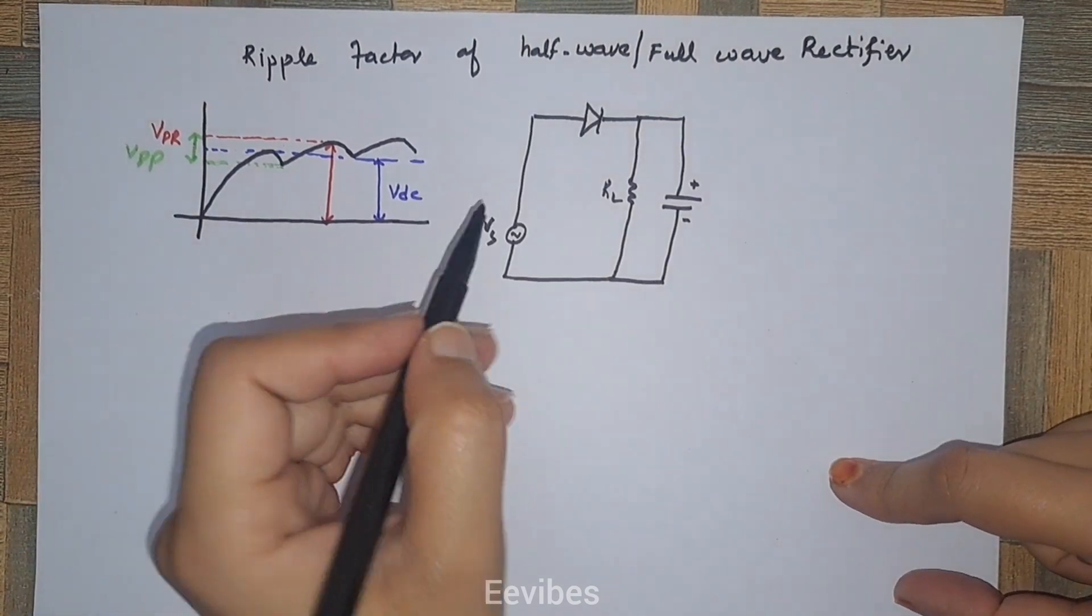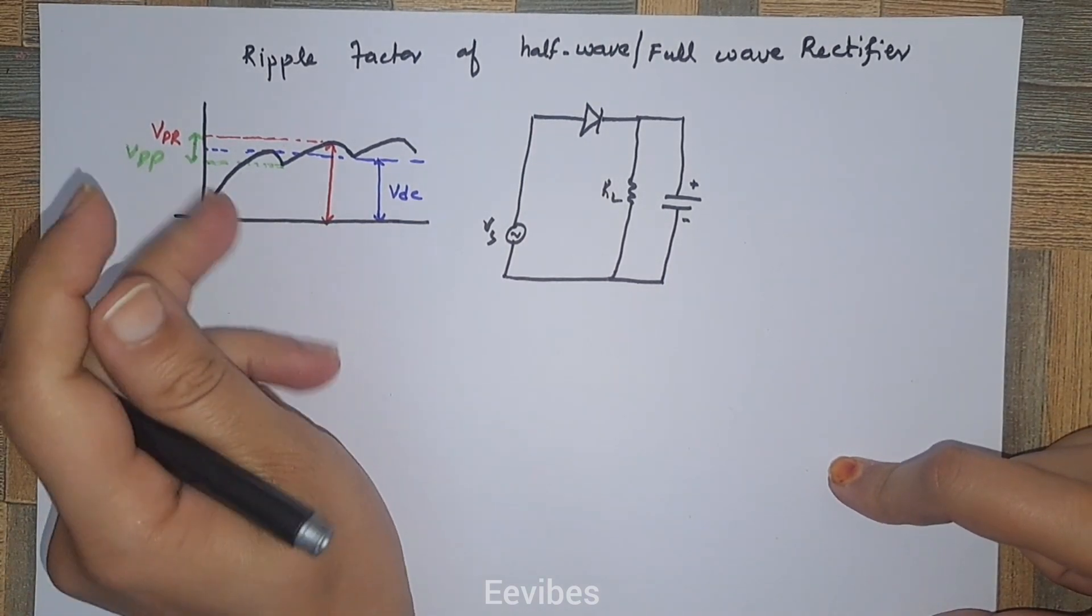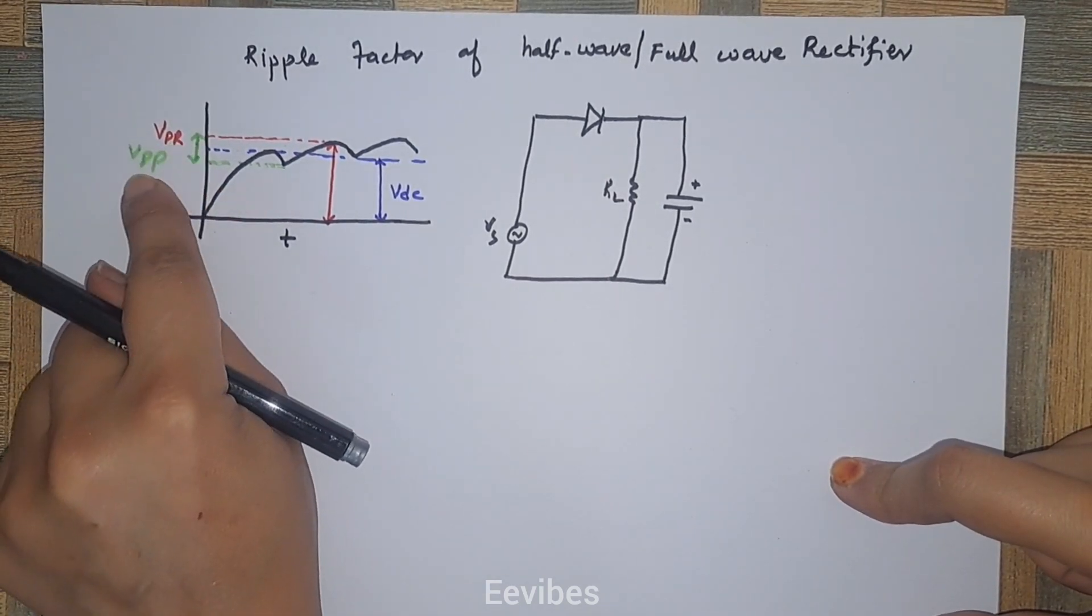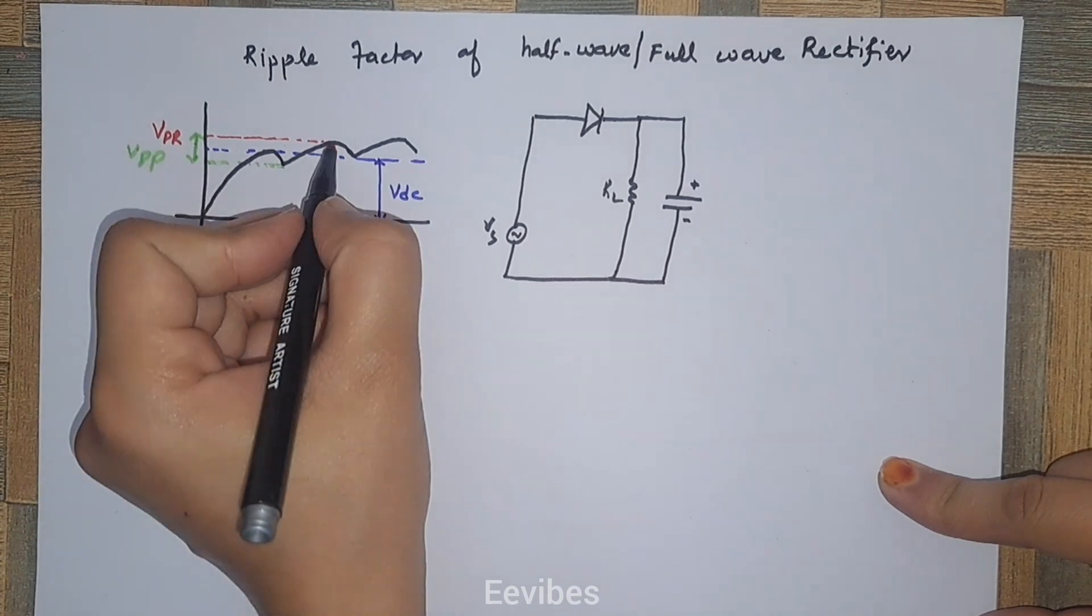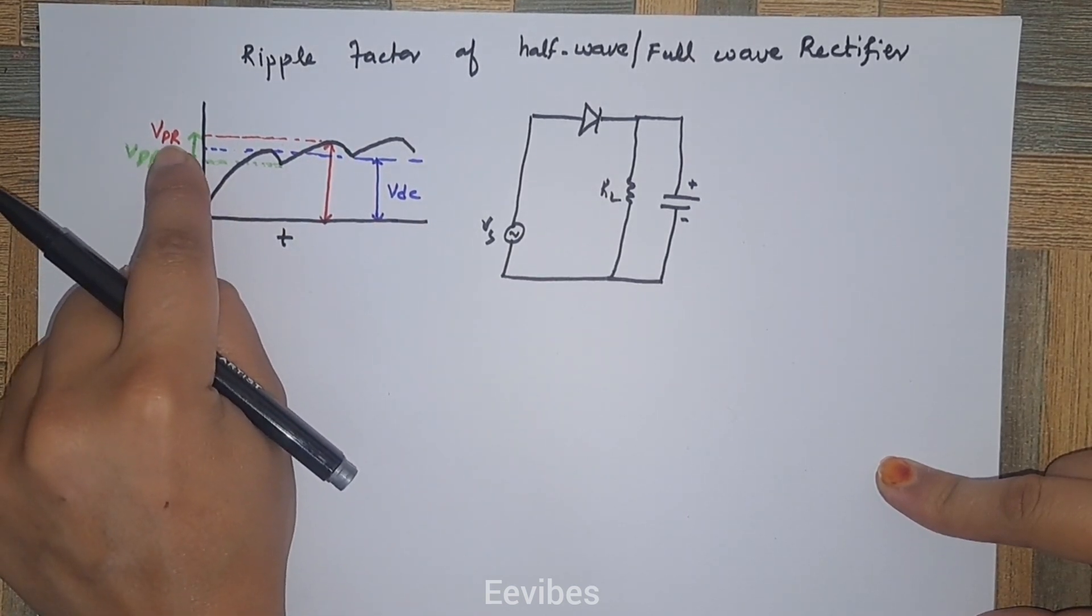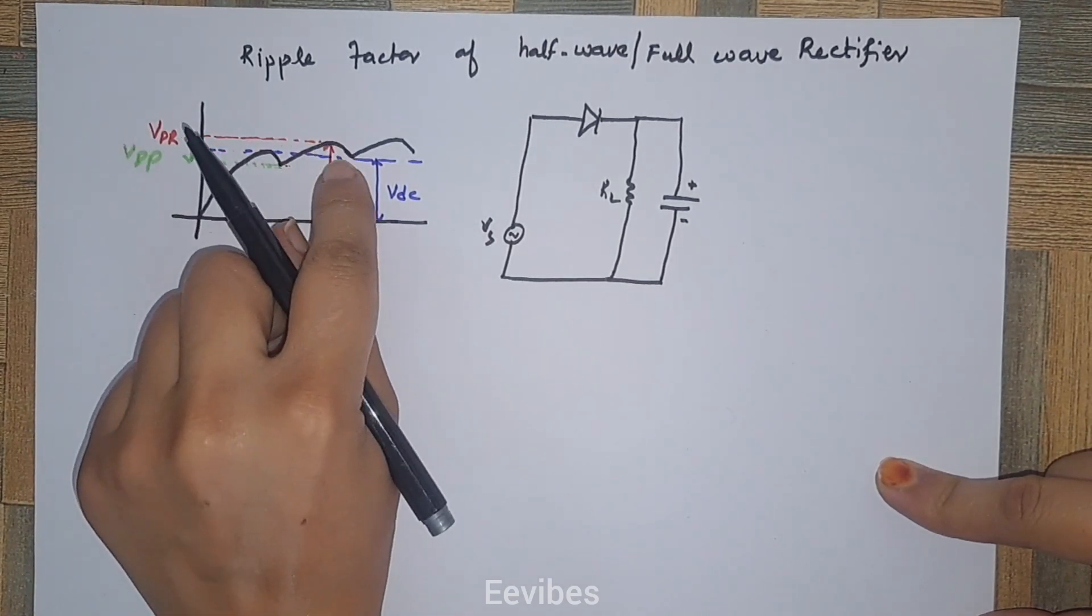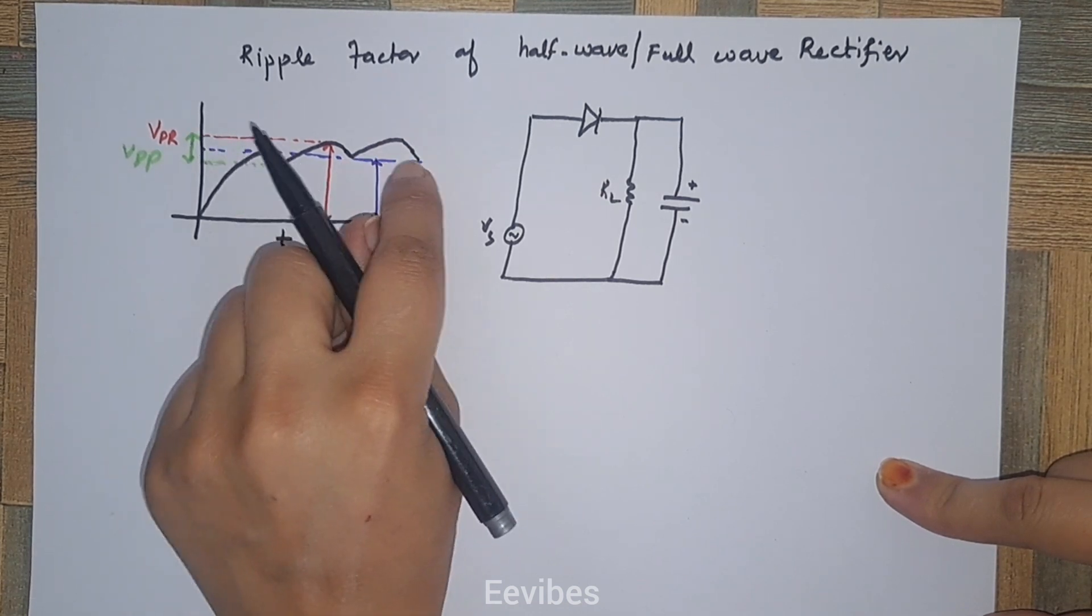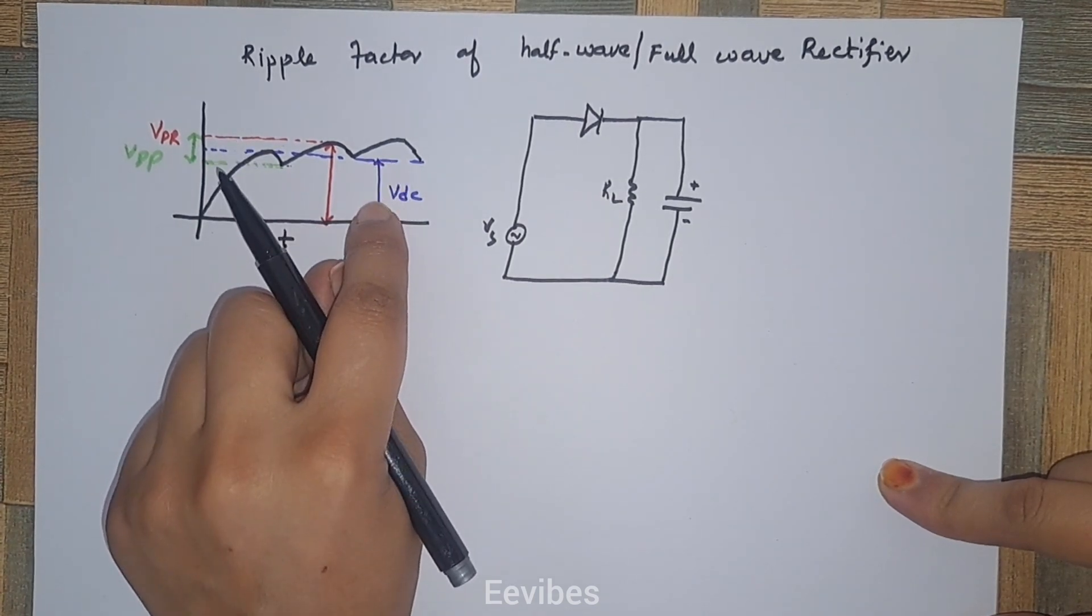Here is the output voltage that we obtain after the filtration process in case of the half-wave rectifier. You can clearly see three parameters represented in this waveform: VPR (peak rectified voltage), V peak-to-peak voltages, and VDC. The peak value of the output voltage with respect to ground is marked as VPR, while the capacitive voltage from peak to peak is the rectified output voltage mentioned as V peak-to-peak.